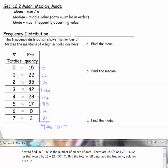Now we need to find n. n is the number of pieces of data. There's 15 zeros and 22 ones. So far, that would be 15 plus 22 equals 37 pieces of data. To find the total of all the data, we would add the frequency column. When we add that, we get 162, so that's the value of n.